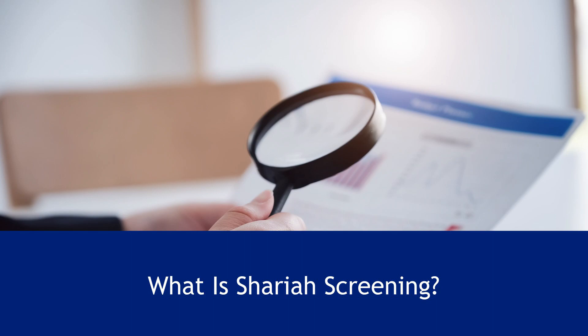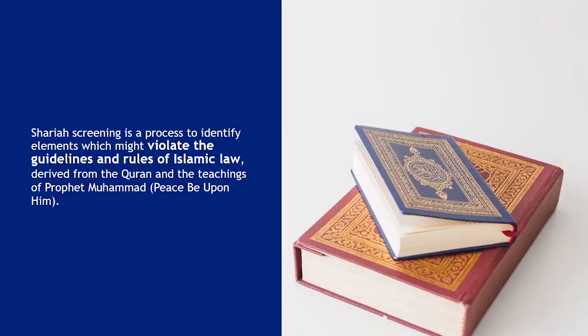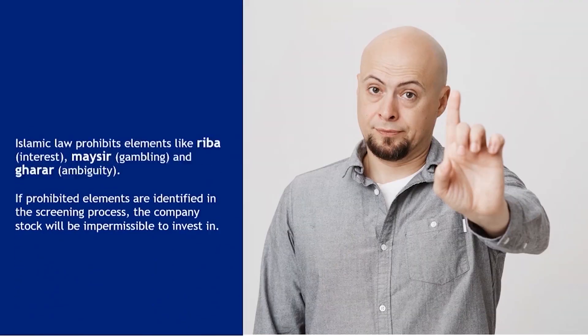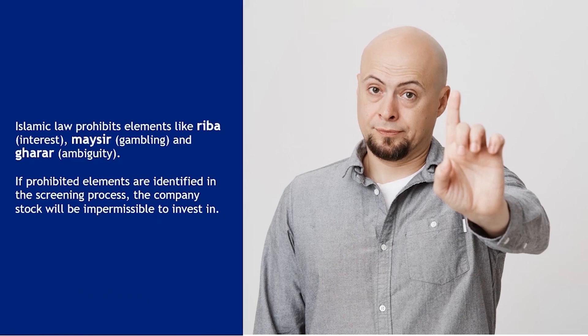Shari'ah screening is a process to identify elements which might violate the guidelines and rules of Islamic law derived from the Quran and the teachings of Prophet Muhammad. Islamic law prohibits elements like riba, maisir, and gharar.